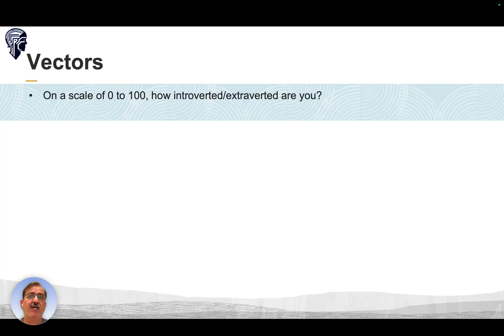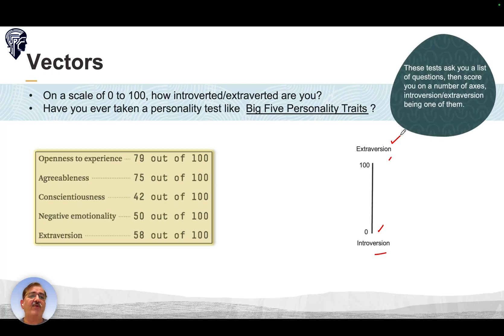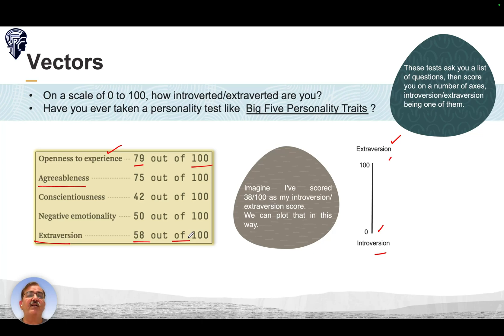On a scale of 0 to 100, how introverted or extroverted are you? Have you ever taken a personality test like the Big Five personality traits? These tests ask a couple of questions and score you on a number of axes. Introversion-extroversion is one of them. For example, openness to experience, agreeableness, and extroversion. Imagine I have scored 38 on 100 as my introversion-extroversion score. We can plot this on a line from 0 to 100, with my score at 38.